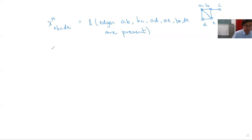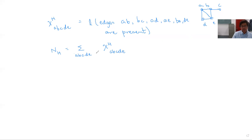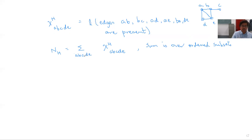We define N_H to be the sum over all ordered subsets (a,b,c,d,e) of χ_H. Some of these may count the same object — for instance, switching labels of a and e may count exactly the same copy. Whether we count ordered or unordered subsets, there are different ways; we just need to ensure we're not double counting. Let's define the random variable this way.